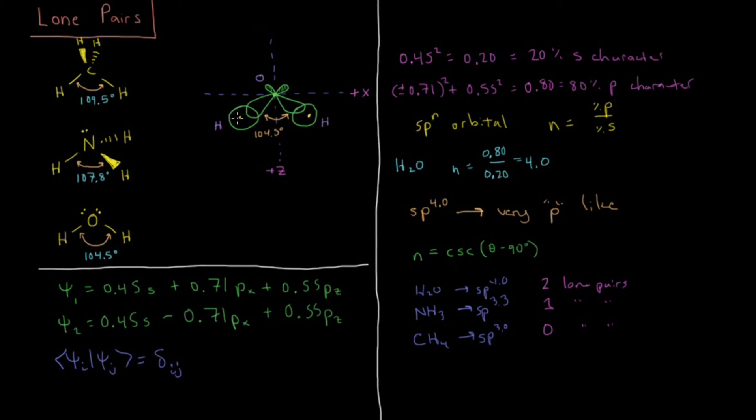because those lone pairs are repelling each other much more, forcing these two bonding orbitals to get much closer together, forcing them to become more p-like and less s-like.